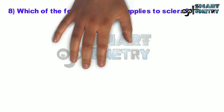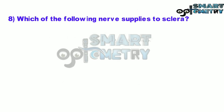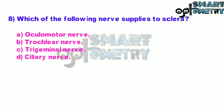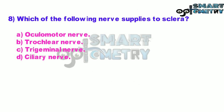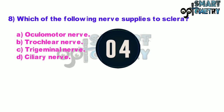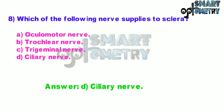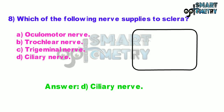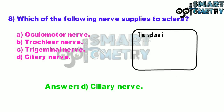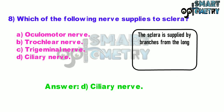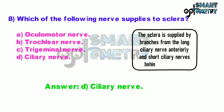Question number eight: which of the following nerves supplies the sclera? A: oculomotor nerve, B: trochlear nerve, C: trigeminal nerve, D: ciliary nerve. The sclera is supplied by branches from the long ciliary nerves anteriorly and the short ciliary nerves behind the equator.